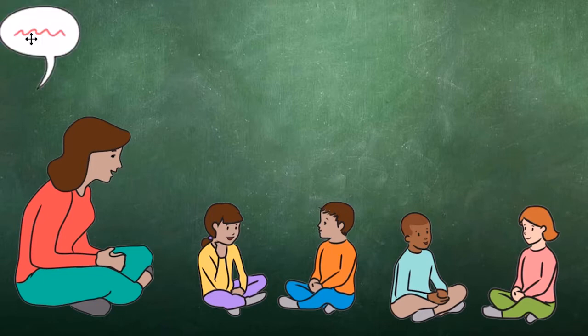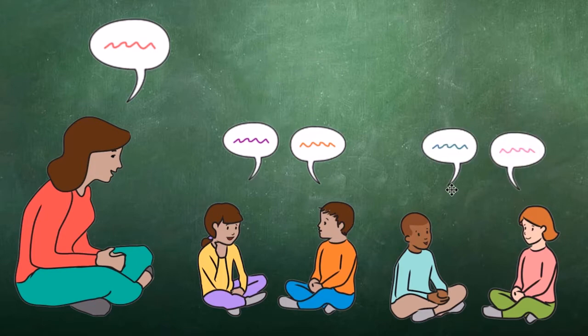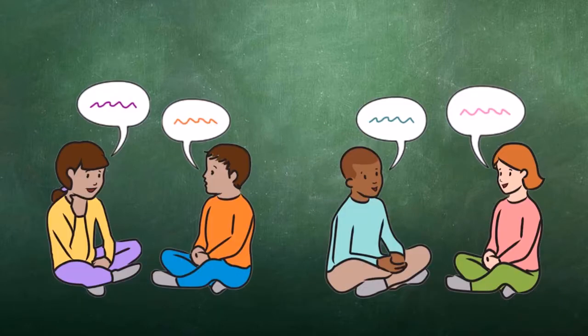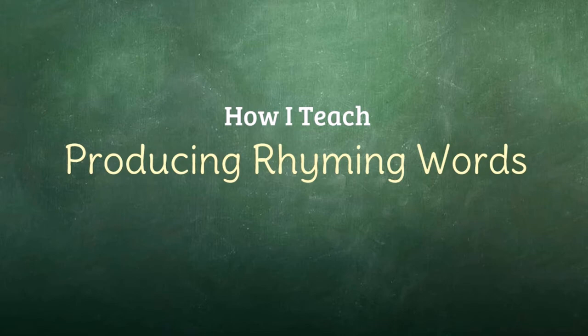I would say, 'Mop!' The students would think and then share with their shoulder partners. I would make sure to have them look at me when they are finished sharing — that way I know they have all had a turn. Let's practice another one. I say, 'Dog.' Then the students take turns listing rhyming words for dog: hog, log, jog, fog. The goal being that when they have mastered rhyme production, they can give me a rhyming word for any word I give them. These are some ways I would teach rhyme production to early childhood students.